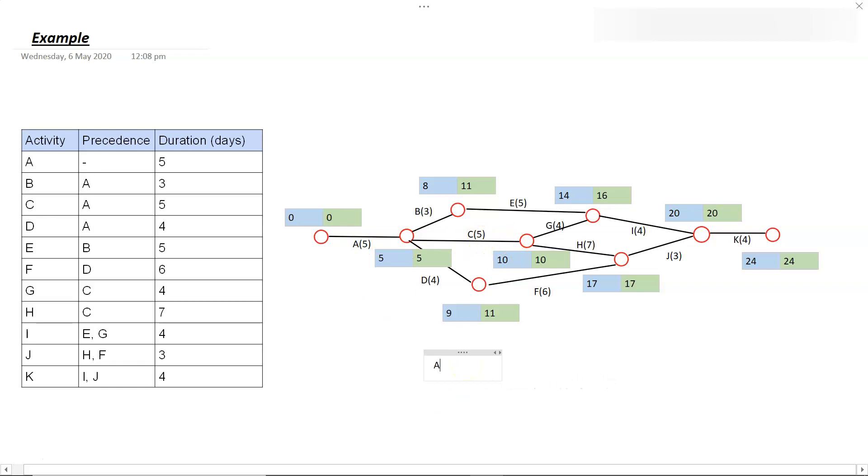So our critical path will be A to C to H to J to K, 24 days. Awesome.